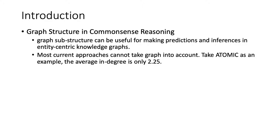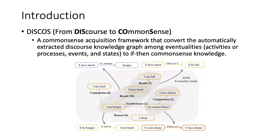Last but not least, graph structure in common sense reasoning is also quite important and has shown promising improvements in several reasoning tasks like QA. However, current acquisition approaches don't take the graph substructure into account. As inherently in Atomic, the average in-degree is only 2.25, making it too hard to leverage graphs.